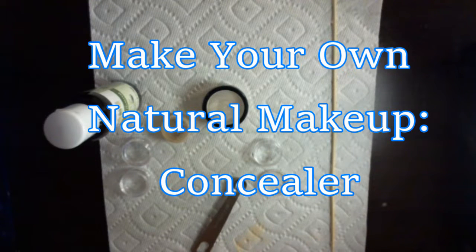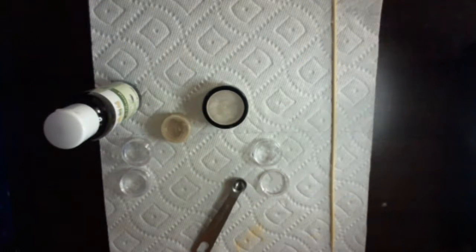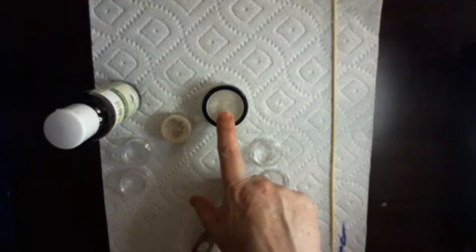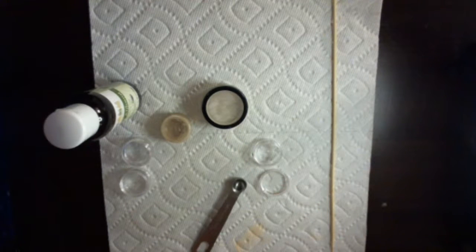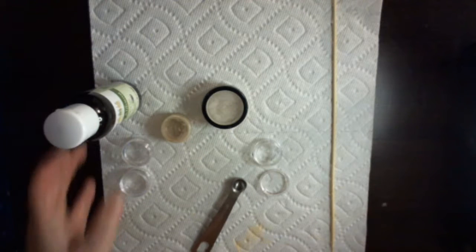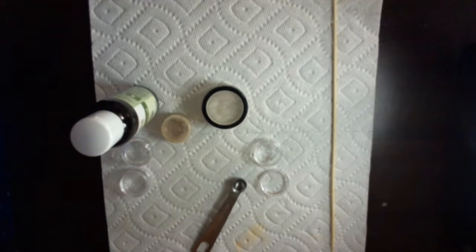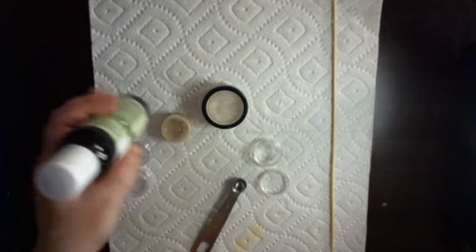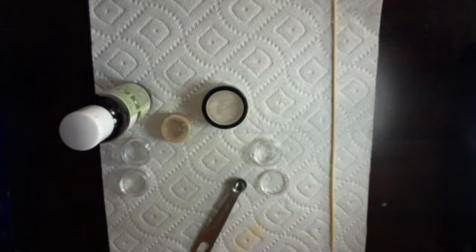Now in our last class we learned how to make foundation and powder, and for this project you are going to need the powder that you made in our last class. The only other ingredient for this that you are going to need is going to be almond oil, so very very simple.